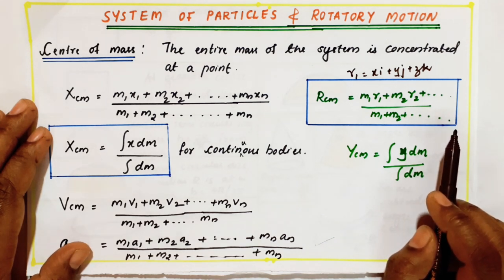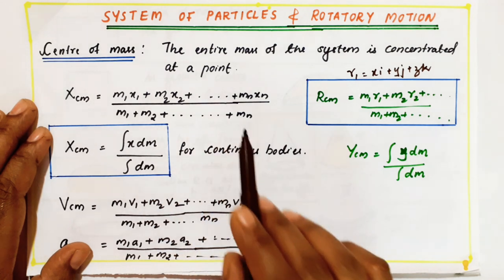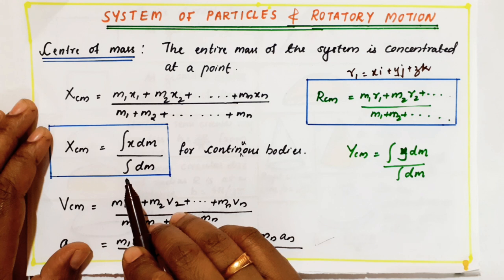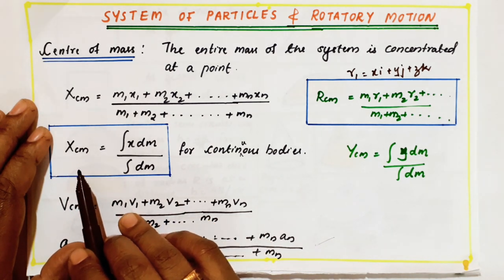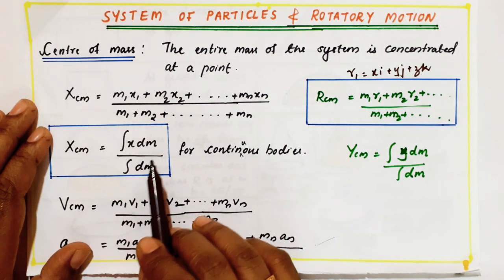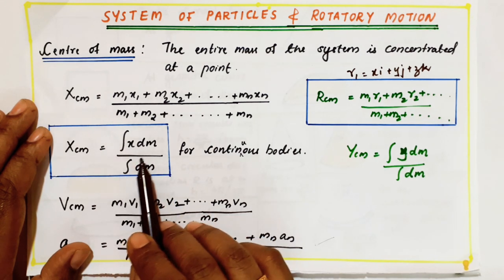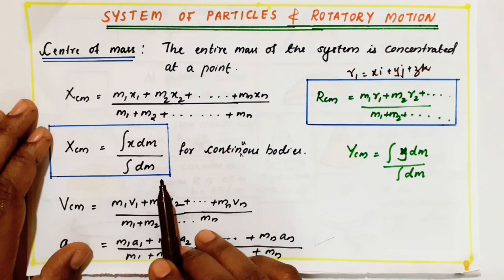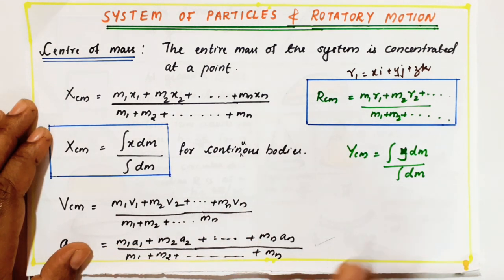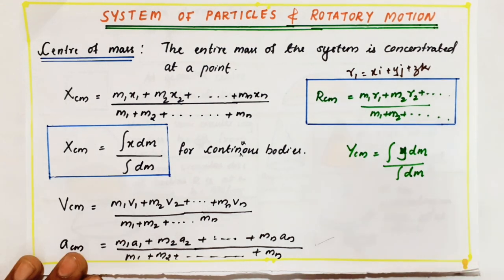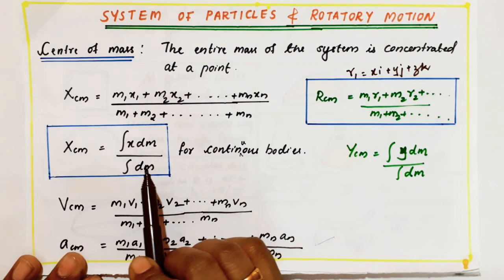But if masses are not given in discrete form like m1, m2, m3, you can use the formula for an extended body: x_cm equals integral of x·dm divided by integral of dm. This is for continuous bodies — meaning extended bodies where the mass is not uniformly distributed but changes with respect to length.